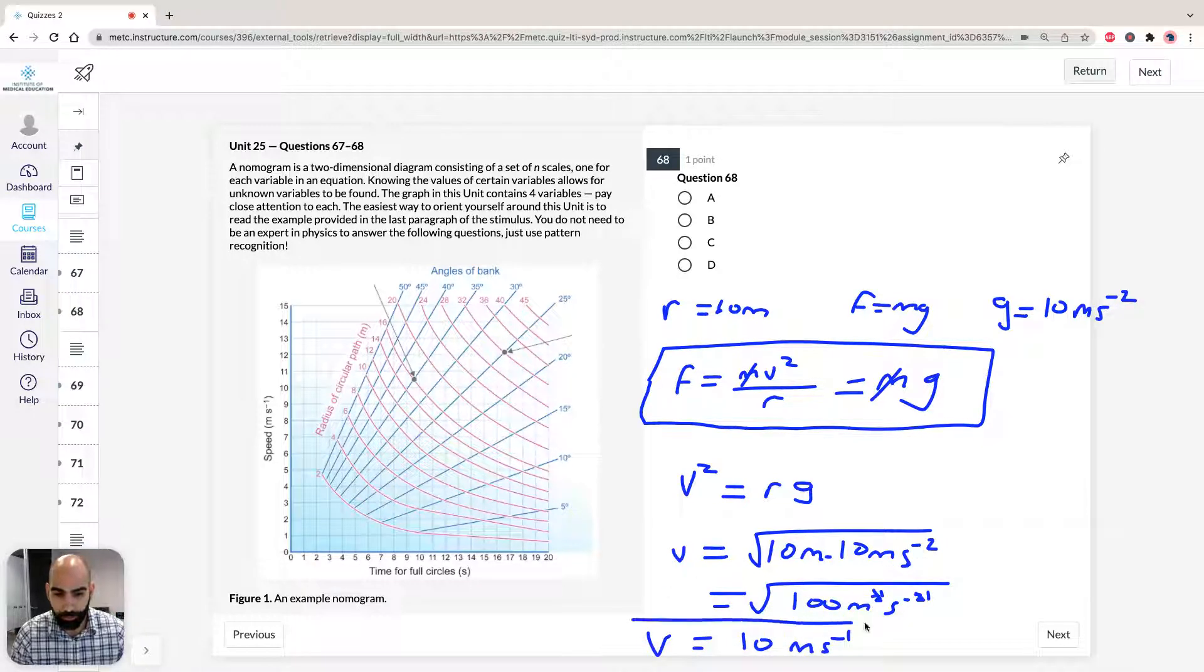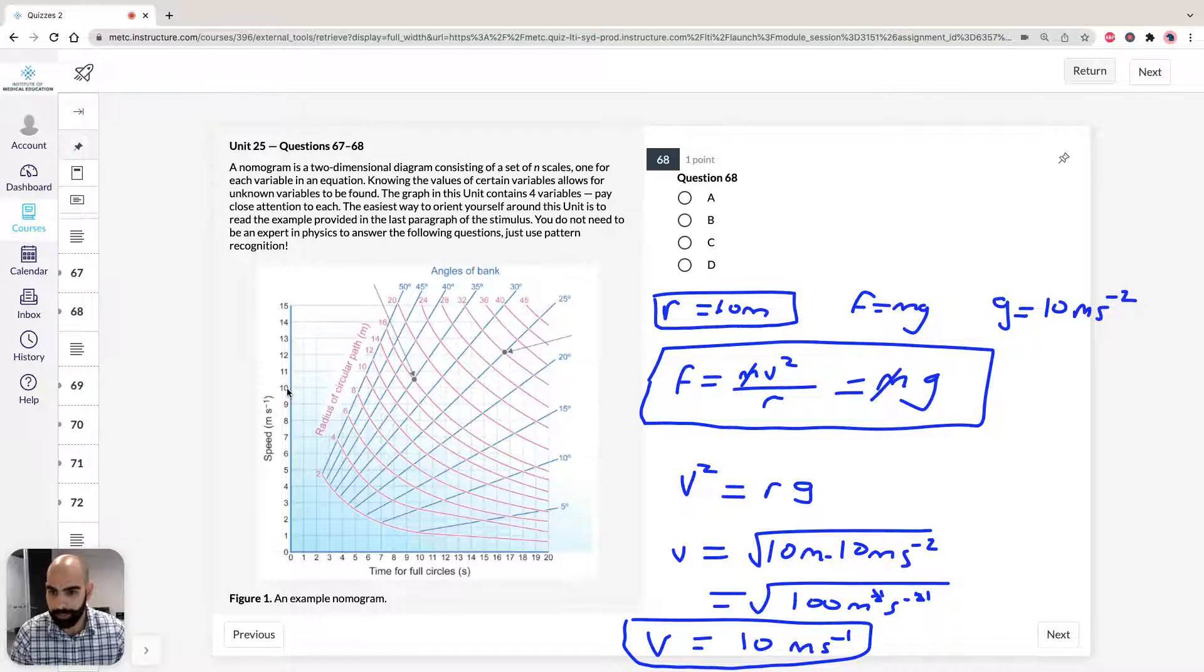So therefore, we have our radius of our circular path is 10 meters, our velocity is 10 meters per second, so we go up here, 10 meters per second, our radius is going to be 10 meters, so we can draw our dot here. Therefore, our angle of bank, so the question asks what is the best estimate of angle of bank, therefore it's going to be, as we can see here, d, so 45 degrees.